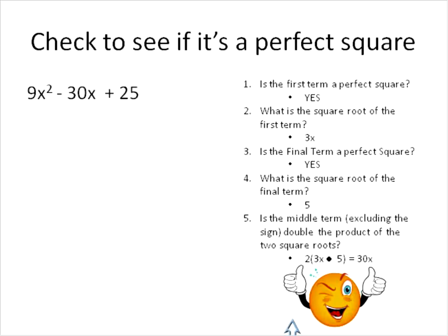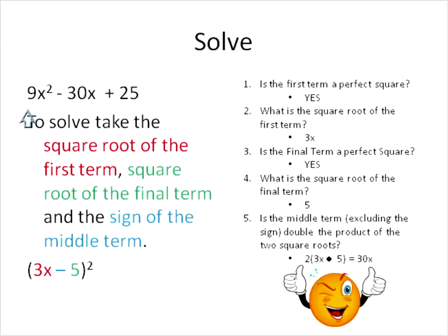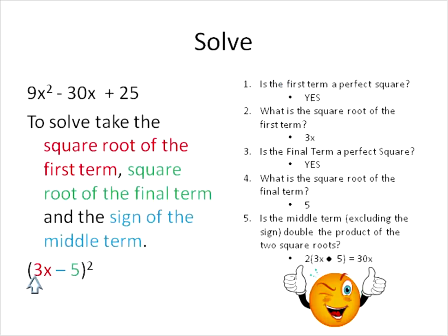That's our check to see if this is a perfect square — you have to ask these five questions each time. Once we know that it's a perfect square, you take the square root of the first term and put it in the parentheses. Take the square root of the final term, put it in the parentheses. And you take the sign of the middle term — in this case it was negative, so the negative goes there. Then you put them in parentheses and square it. And that's how you solve it.